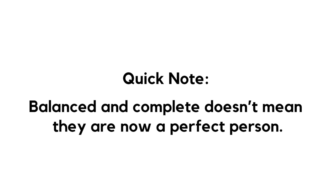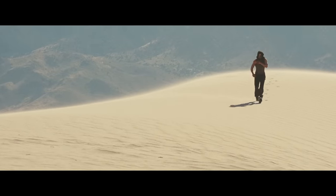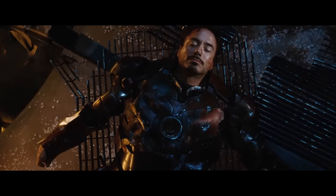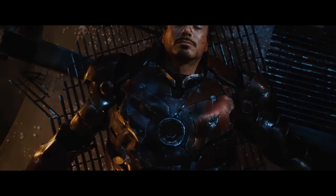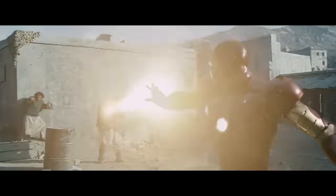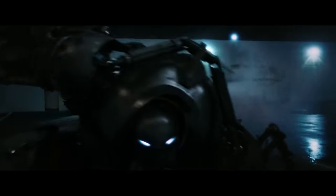Quick note: balanced and complete doesn't mean they are now a perfect person. It means they found the particular truth that needed to be found in this particular story. In Iron Man, this change happens quickly — within the first 40 minutes of the film. In some stories, it will not happen this quickly. Sometimes a character will struggle to find and accept the truth until the very end. But the main point of the change arc is that a character goes from believing a lie to finding the truth that allows them to become balanced and whole. For the rest of the film, Tony tries to apply this newfound truth to himself and his company, encountering darker secrets and larger opposition.